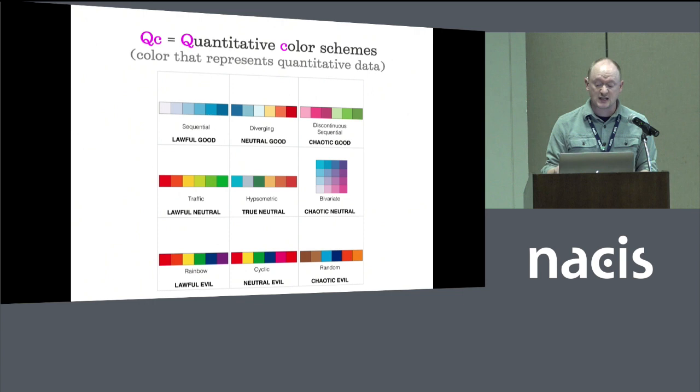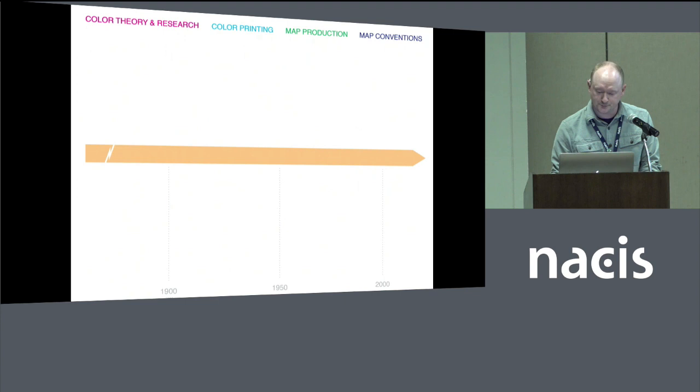These are my four historical narratives: color theory and research, color printing, map production, and map conventions. Now a couple of disclaimers. First, I am not charting a definitive history of colors or schemes; my interests lie in modern cartography. Second, this timeline is for illustrative purposes only and for this talk, so there are a lot of gaps. But I have included a lot more information than I have time to discuss today.